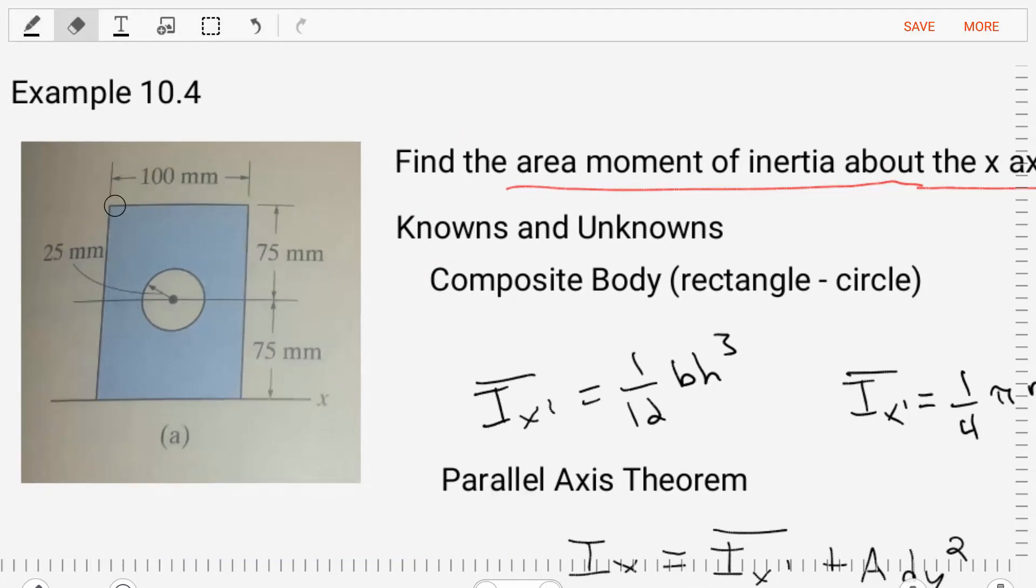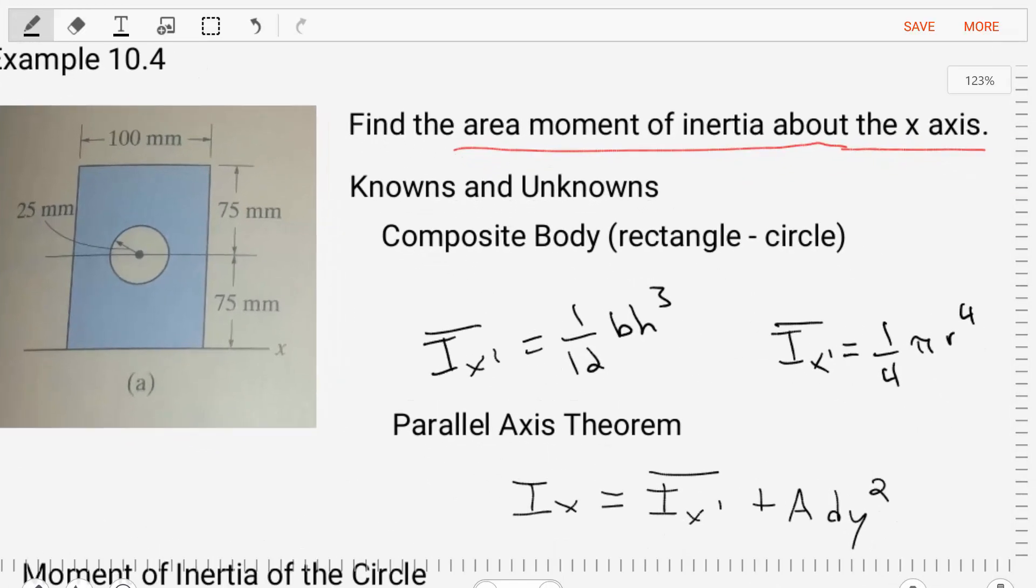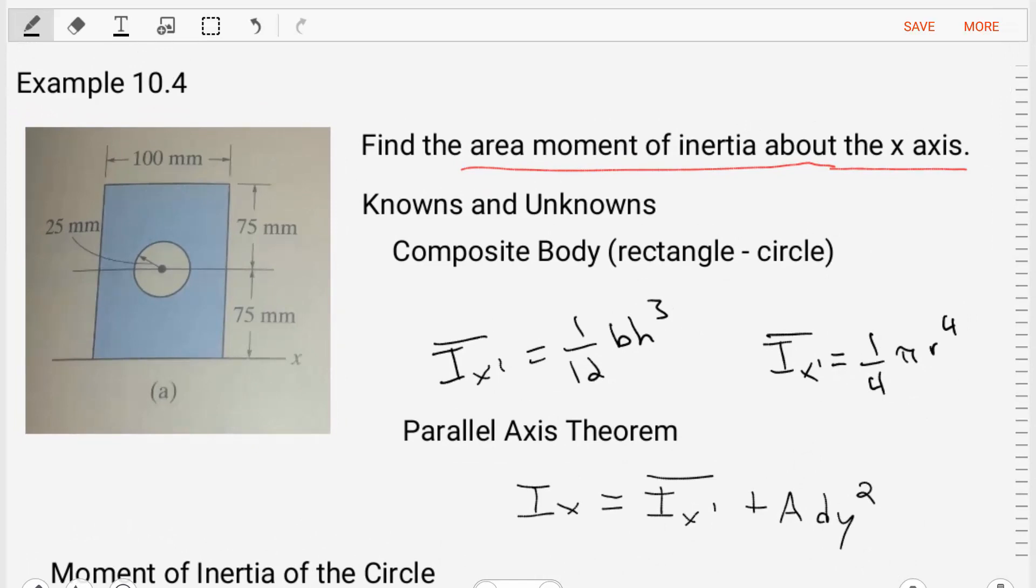After analyzing the structure, we can list out some things that we know about this problem. We know, looking at what we're given, that we have a composite body that consists of a rectangle minus a circle.